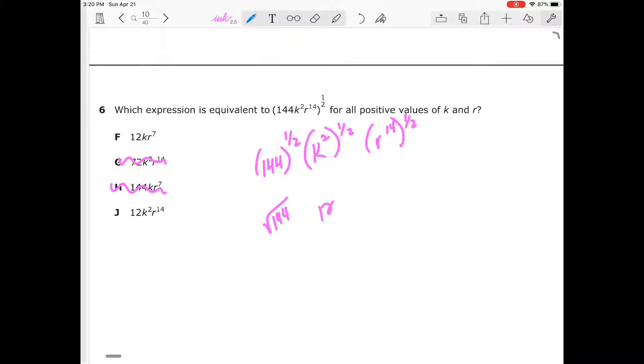Two times 1/2 will give me k to the 1. Now the mistake they made here, if somebody chose that as the answer choice, they probably didn't distribute that 1/2 all the way and forgot to distribute it to each term. So 14 times 1/2, that's going to give me r to the 7th, which gives us our answer choice F.